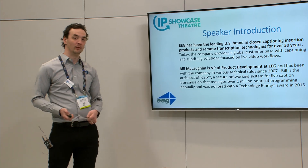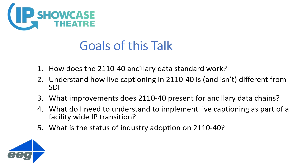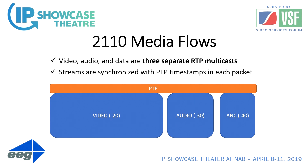How does 2110-40 work? With 2110, your major difference from SDI is instead of having a single stream with time-domain multiplexing between video, audio, and ancillary data, you have three different media streams. You have a dash-20 multicast for video — obviously the largest — dash-30 for audio, maybe a hundred or a thousand times smaller, and then the lowest bit rate of all: dash-40 data for ancillary.